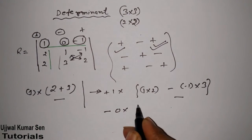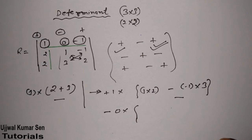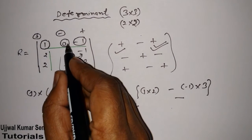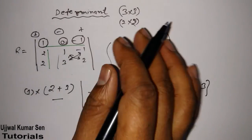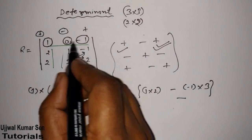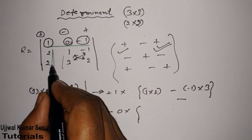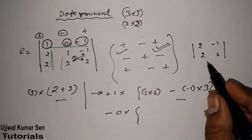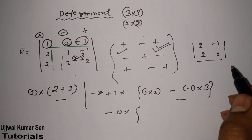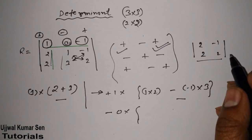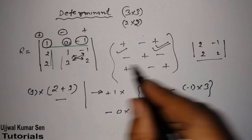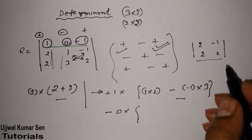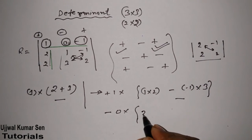Next, this is minus, and I have to choose 0. Although multiplying anything with 0 gives 0, I am still sharing this step to help you understand each step. If you select this 0, hide the corresponding column and row, and what remains is the values 2, 2, -1, 2. We do cross multiplication: 0 multiplied by (2 multiplied by 2 minus (-1) multiplied by 2).